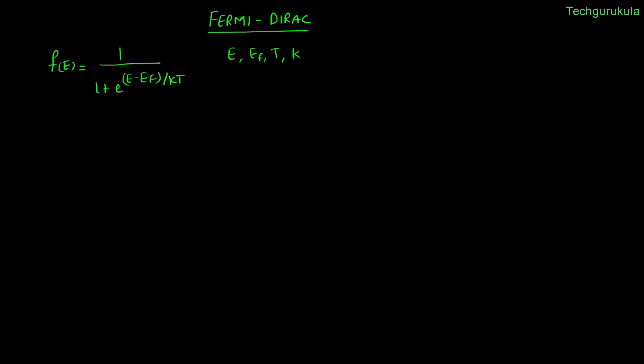So what does f(E) mean? If we have an energy level and substitute E into f(E), it gives us the probability of an electron filling that energy level. Because it gives a probability, the value of f(E) will always lie between 0 and 1.